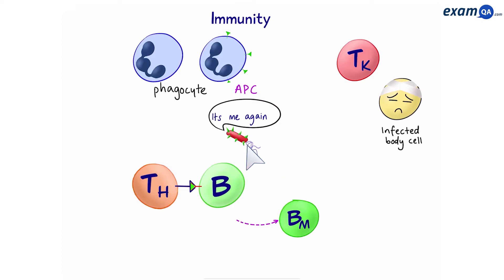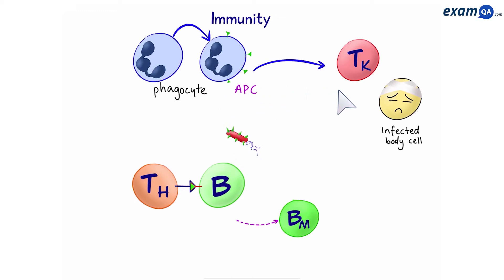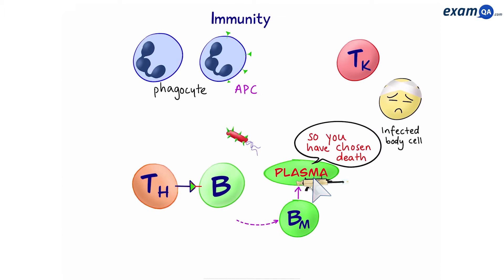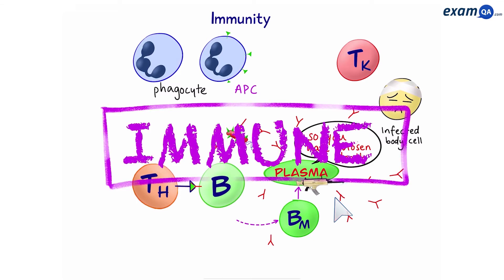However, in the future the same pathogen could re-enter the body. Now instead of going through the long process of APC activating T helper cell turning on B cells, since we have B memory cells they can simply turn into plasma cells. The plasma cells are ready to produce antibodies and take out the pathogen. In the second infection, the person is less likely to feel ill because the plasma cells will produce lots of antibodies to take out the pathogen before it can damage the person's cells. In this scenario we can say the person has become immune.